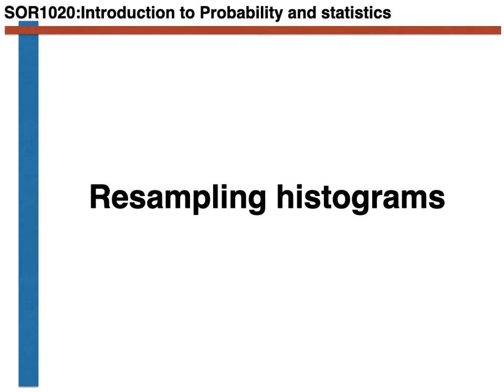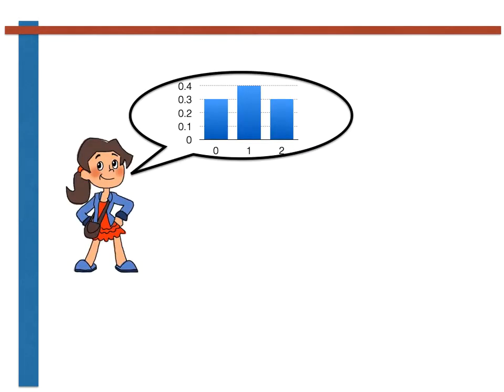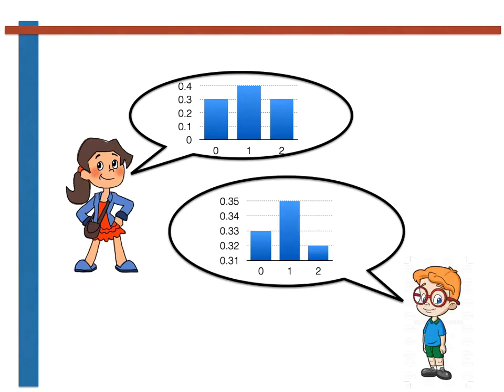I mention Alice and Bob again because let's suppose that Alice and Bob estimated the probability mass function for a random variable by computing a histogram. Alice's result might have looked something like this, while Bob's result might have looked something like this.